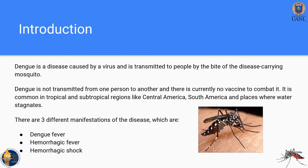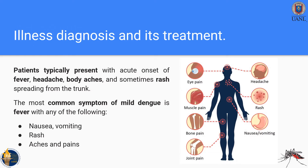There are three different manifestations of the disease: dengue fever, hemorrhagic fever, and hemorrhagic shock. For illness diagnosis and treatment, patients typically present fever, headache, body aches, and sometimes a rash spreading from the trunk. The most common symptoms of mild dengue are nausea, vomiting, rash, and aches and pains.